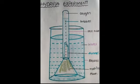Place some water plant like Elodea, hydrilla, or Chara in a short stem funnel and keep it in the beaker. Then pour water into the beaker.